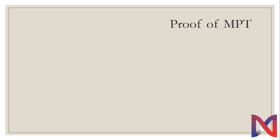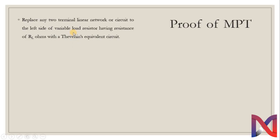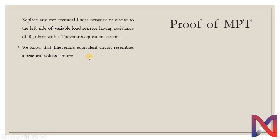Let's now prove the maximum power transfer theorem. We can replace any two-terminal linear network or circuit to the left side of the variable load resistor having resistance R_L ohms with a Thevenin equivalent circuit. It is recommended to revise the Thevenin equivalent circuit because we are going to make use of it here. The Thevenin equivalent circuit resembles a practical voltage source.